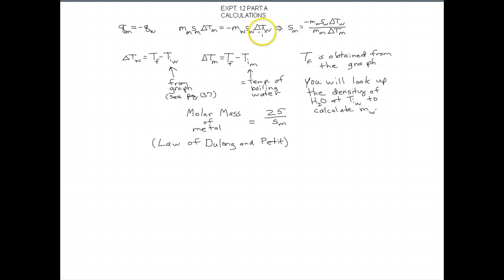Solve this equation for the specific heat of the metal, which is the first thing you're looking for, and you get this equation right here. You pretty much have everything you need to plug into here. To get the mass of the water, okay, you know you measured out 25.00 milliliters, look up the density once you get the temperature.